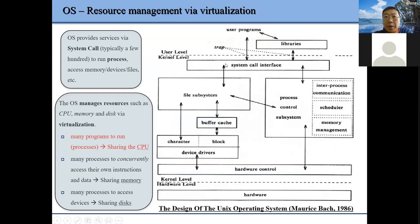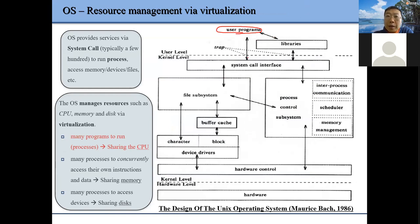Before we go to the process, let's look at our overall operating system architecture. Here is the user program — we introduced system calls. Your system call traps into the kernel. Inside the kernel, you can think of it as a system call service provider — based on different system calls, it provides different services. For example, if we want to create a new process, we call fork.